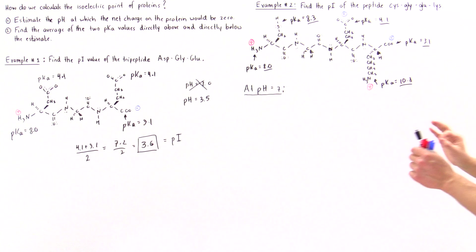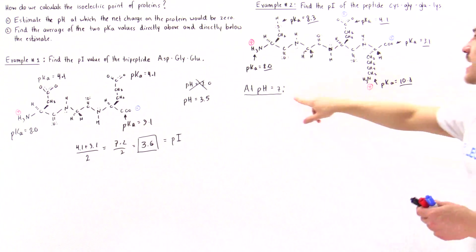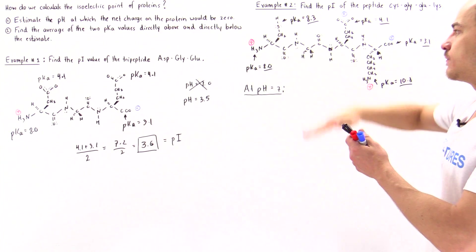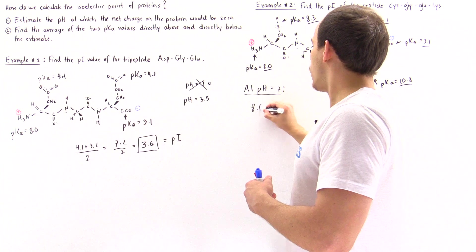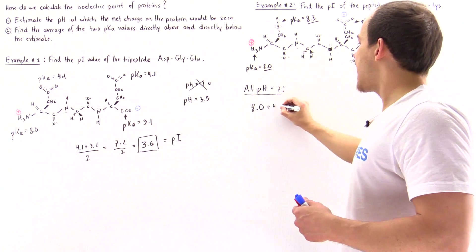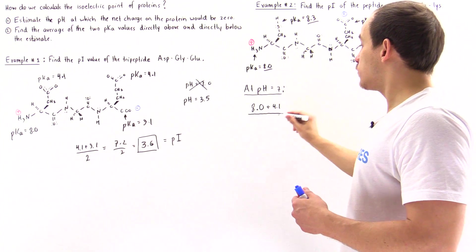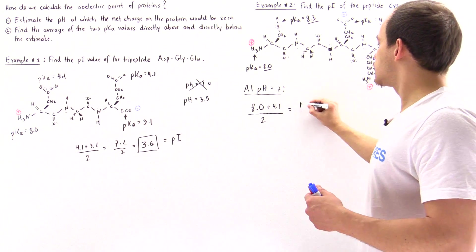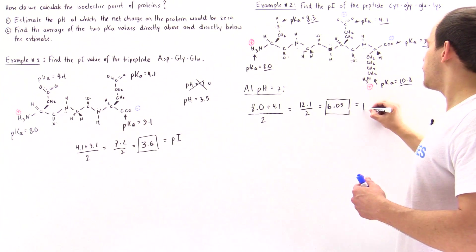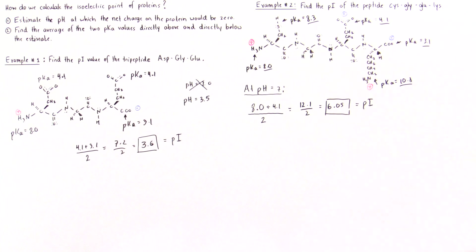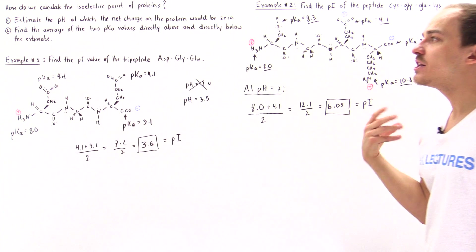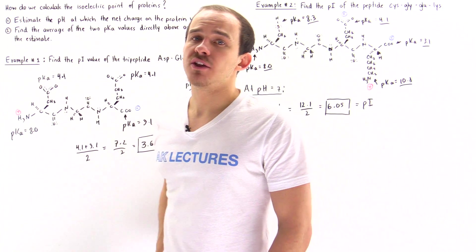Moving to step two: the pKa directly above pH 7 is 8.0 (the closest value above 7), and the pKa directly below pH 7 is 4.1. Averaging: (8.0 + 4.1) / 2 = 12.1 / 2 = 6.05. The isoelectric point, PI, for this tetrapeptide is 6.05. These two steps provide the general rule for finding the isoelectric point of proteins.